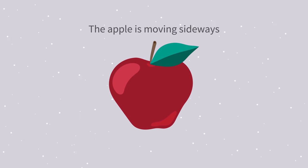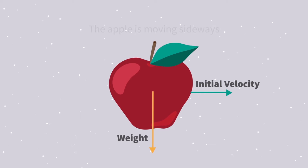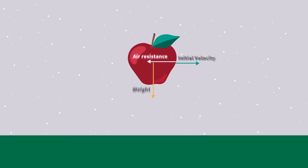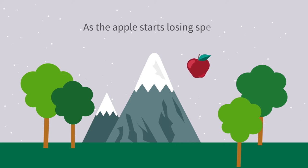The apple is moving sideways with an initial velocity. There is the gravitational force of attraction trying to pull the apple downwards, and air resistance slowing the apple down. The apple slows down to the action of air resistance. As the apple starts losing speed, it falls under the action of its weight.